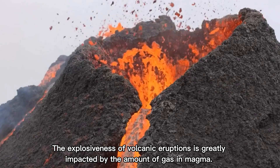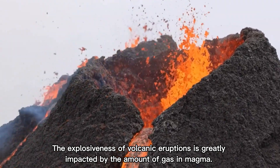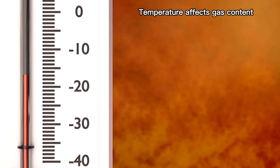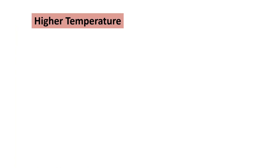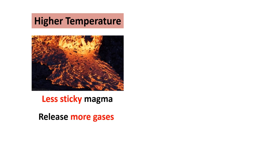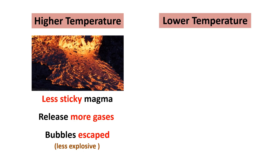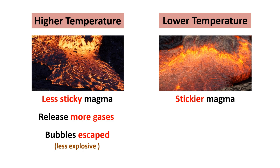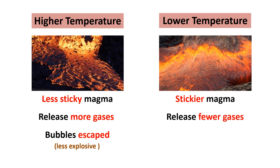Gas content: The explosiveness of volcanic eruptions is greatly impacted by the amount of gas in magma. As mentioned earlier, temperature affects gas content, with rising temperatures making magma less sticky and releasing more gases. This reduced stickiness allows bubbles to escape, resulting in less explosive eruptions. On the flip side, lower temperatures make magma thicker.